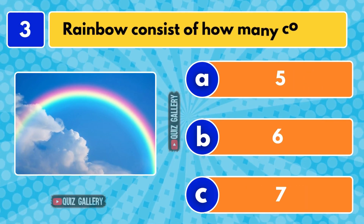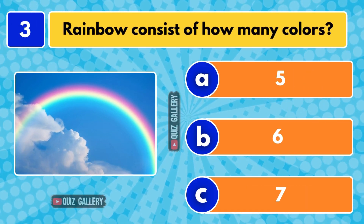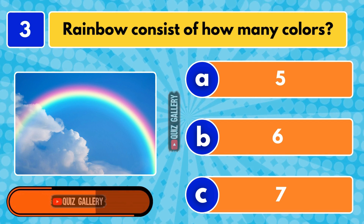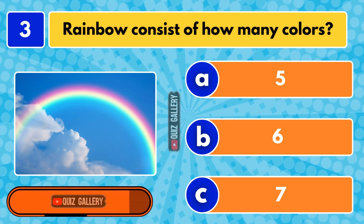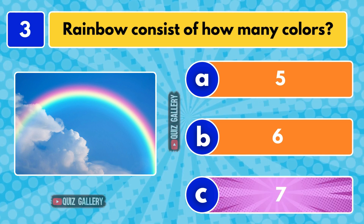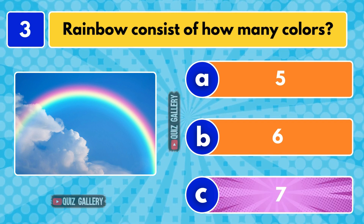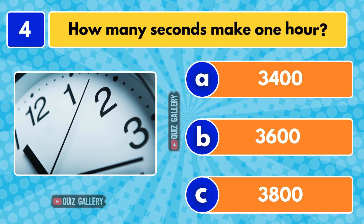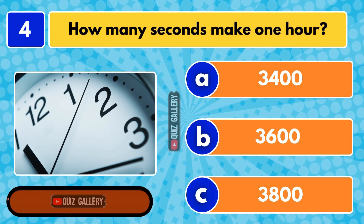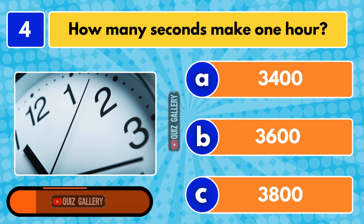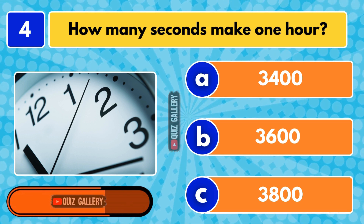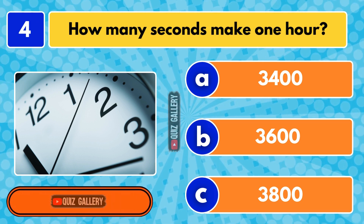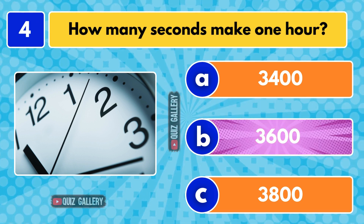Rainbow consists of how many colors? Seven colors. How many seconds make one hour? 3,600 seconds.